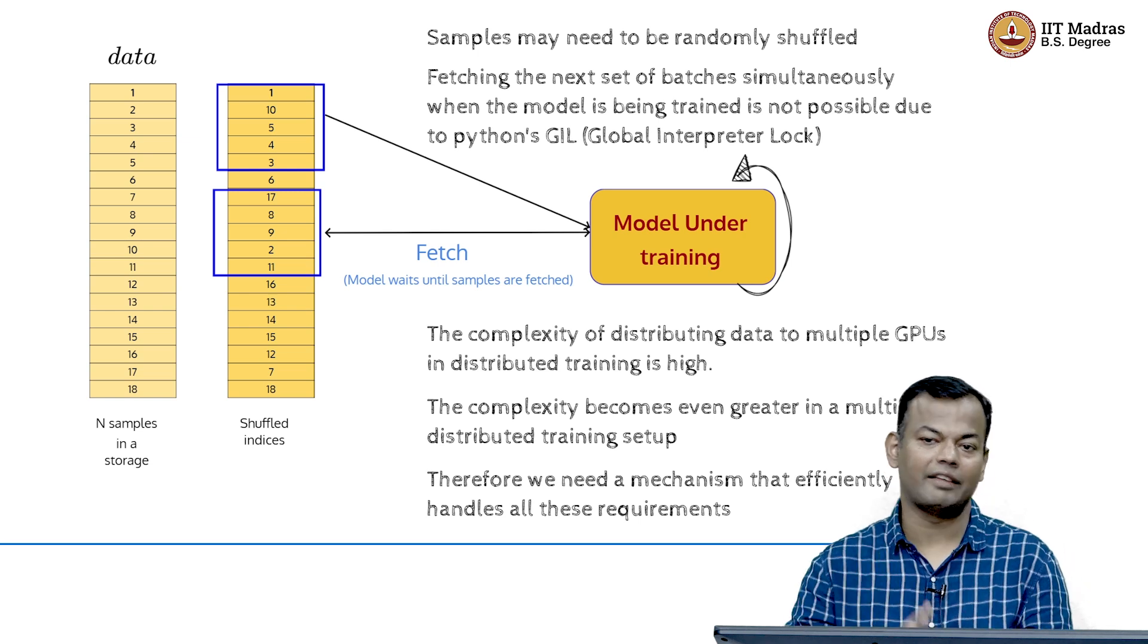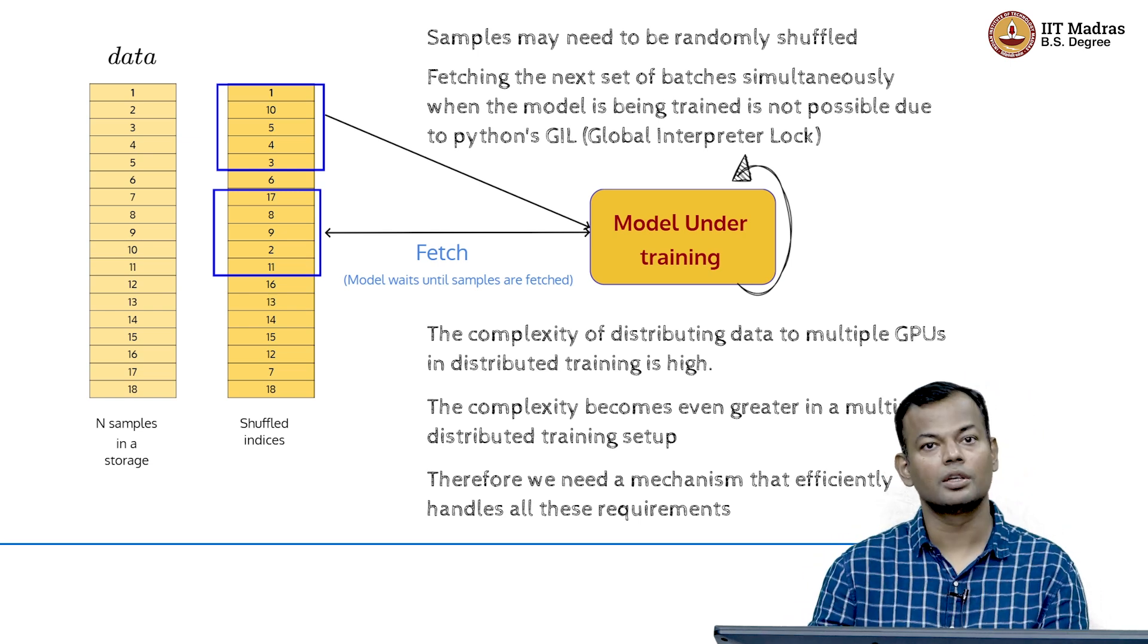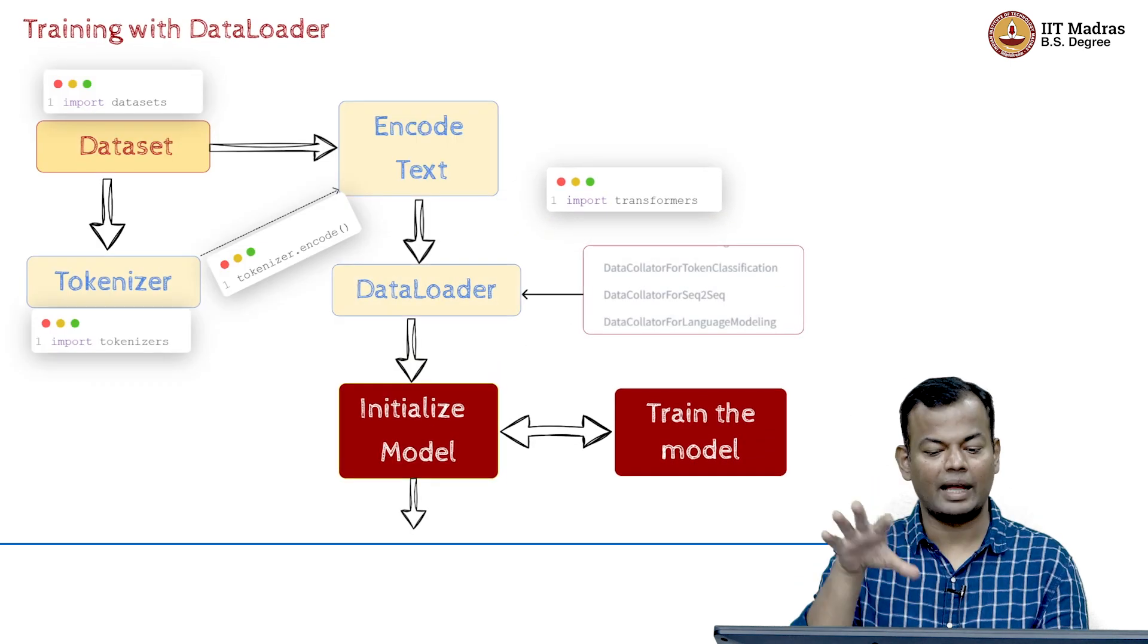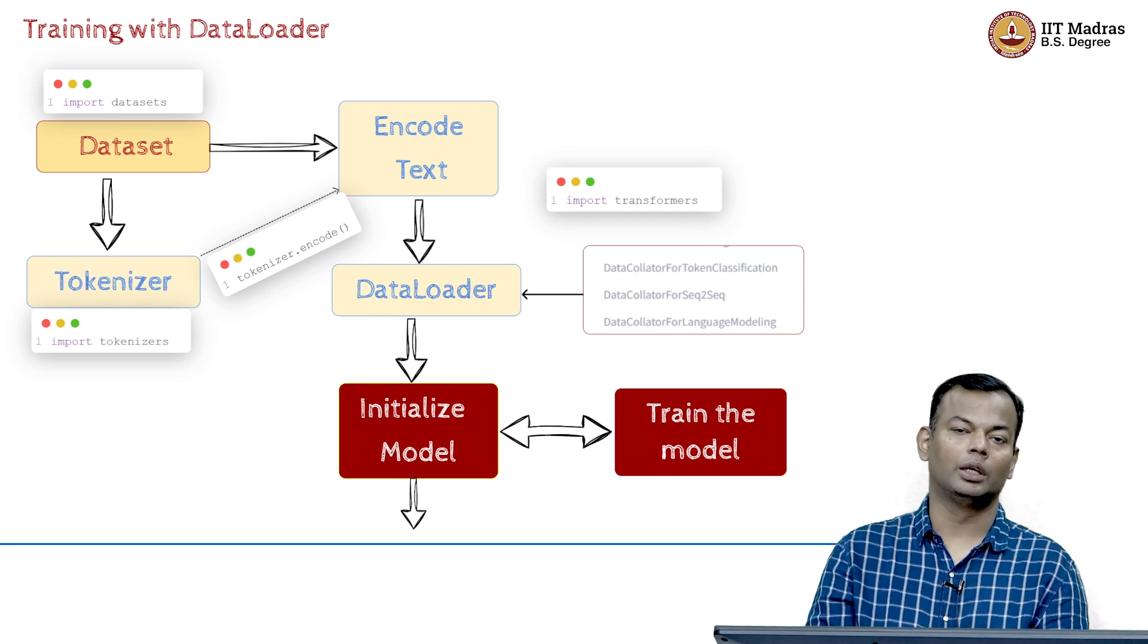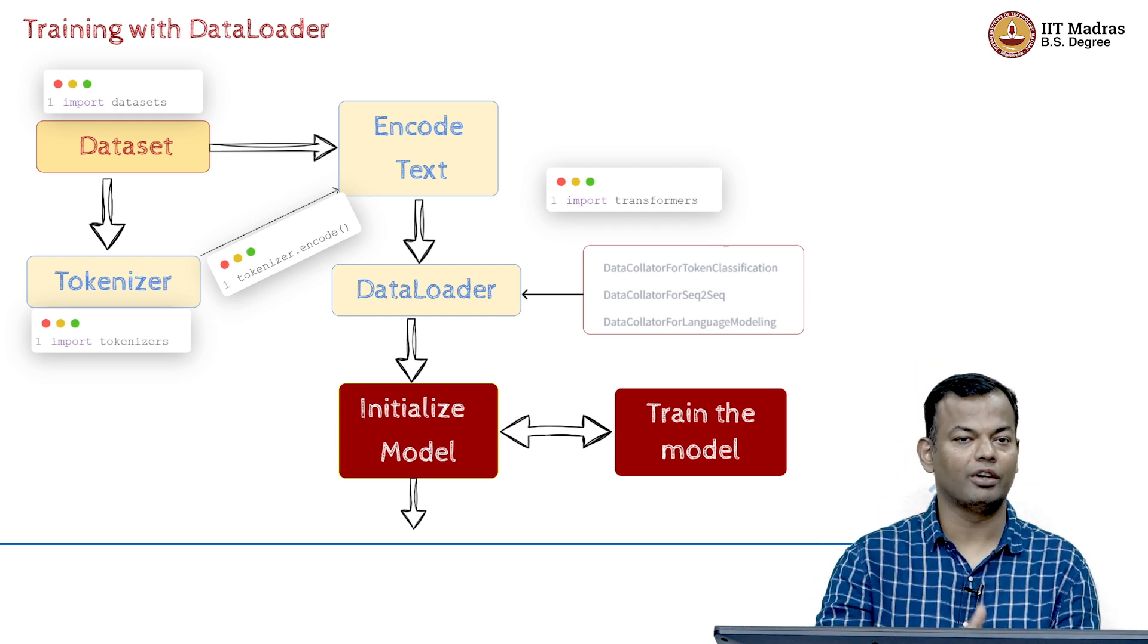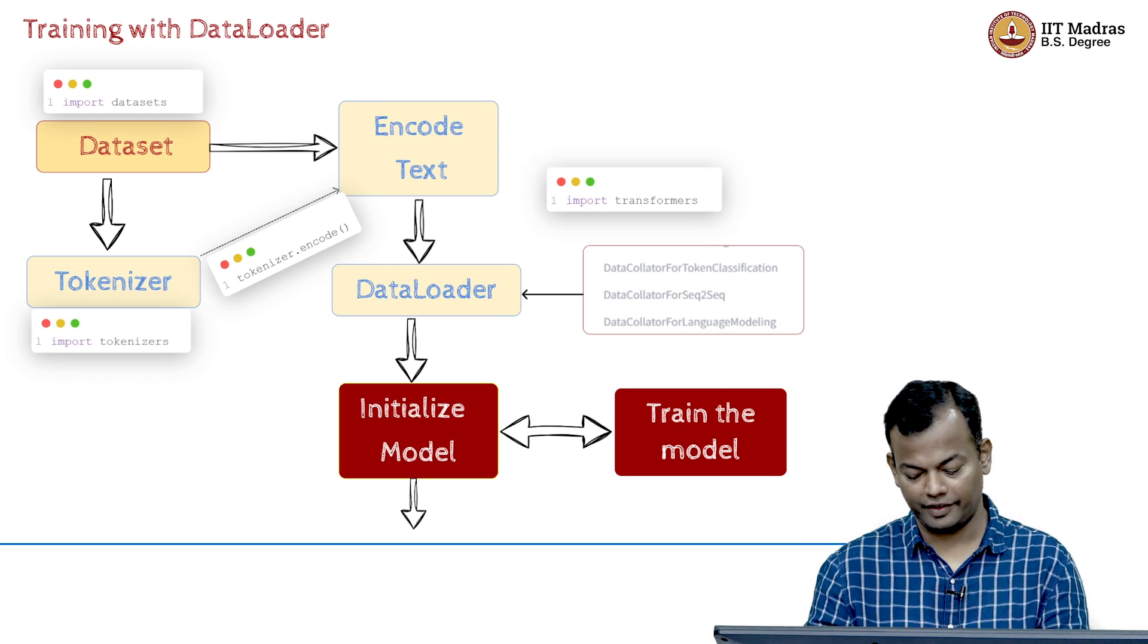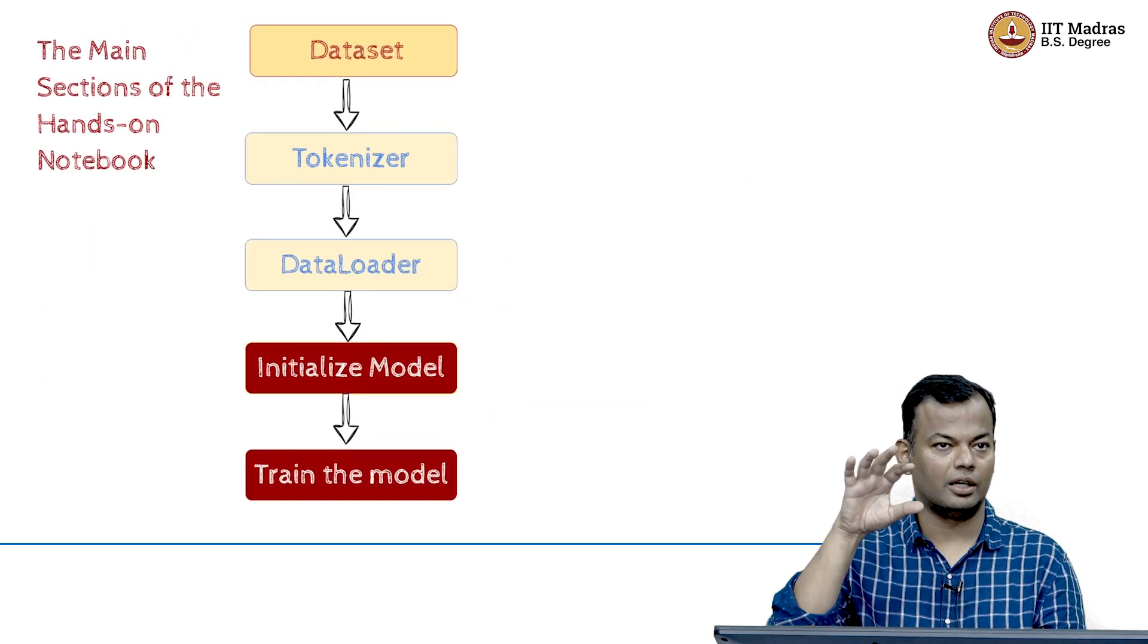Now, what we need is an efficient mechanism of doing this. And as usual, of course, the Hugging Face ecosystem will come to our rescue where all of this is abstracted and we could use the built-in features in Hugging Face which can allow us to abstract all this complexity of fetching the data, sending it to different nodes, different GPUs and all of that. And we are going to look at some of these features in this section, in the notebook corresponding to this section.